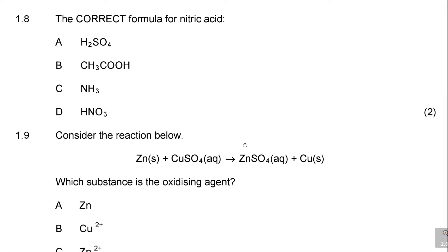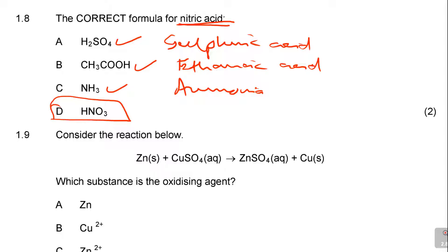Question 1.8. The correct formula for nitric acid. This is sulfuric acid, this is ethanoic acid, this is ammonia. It's not even an acid. And there is the answer D, HNO3, which is nitric acid.